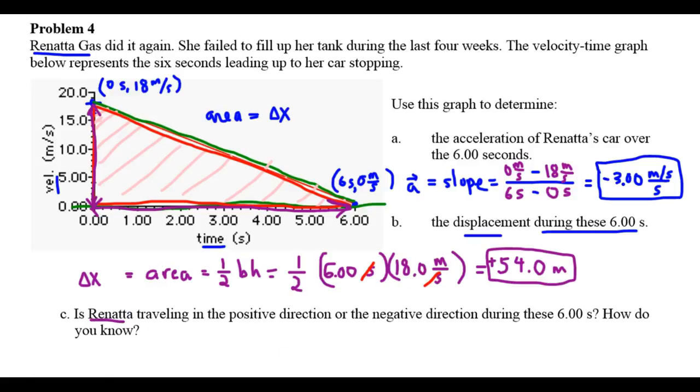Part C. Is Renata traveling in the positive direction or in the negative direction during these six seconds? How do you know? There are two ways to think about this. Remember, positive is going to be to the... She's going on a road, so she's moving on the x-axis. Here's the x-axis. And she's either going to the right or she's going to the left. On our x-axis, to the right is positive, left is negative. Look at this. Her displacement was positive. So if the car, let's say the car was here, it slows down, but it ends up farther right as it slows. So it goes from here over to here, positive 54 meters of displacement. So you know the car is going to the right because the displacement is positive.